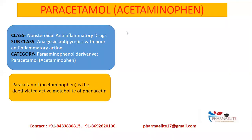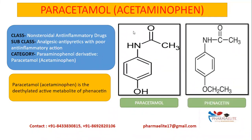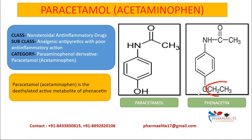Paracetamol is the de-ethylated active metabolite of phenacetin. Looking at the structure, phenacetin has an ethyl group C2H5 (that is CH2CH3), whereas paracetamol doesn't have this group — it has the OH group directly attached. So paracetamol is the de-ethylated active metabolite, meaning the ethyl group is removed and replaced by OH.